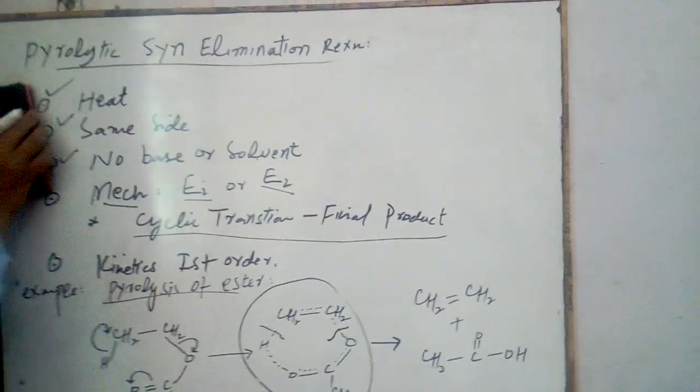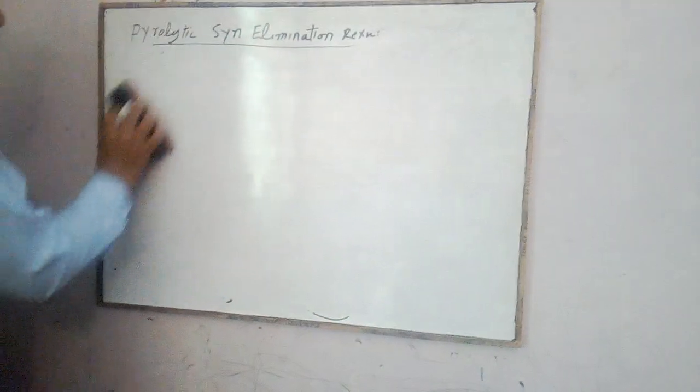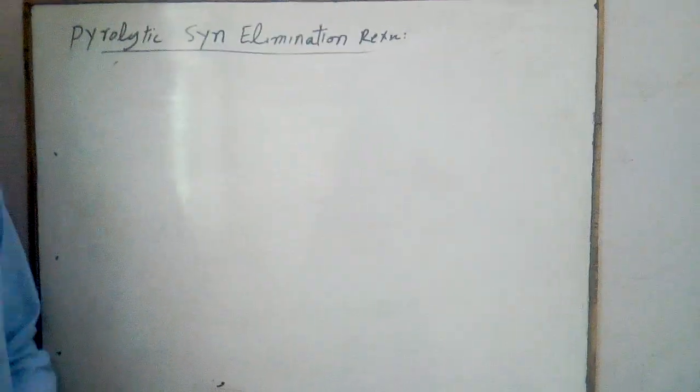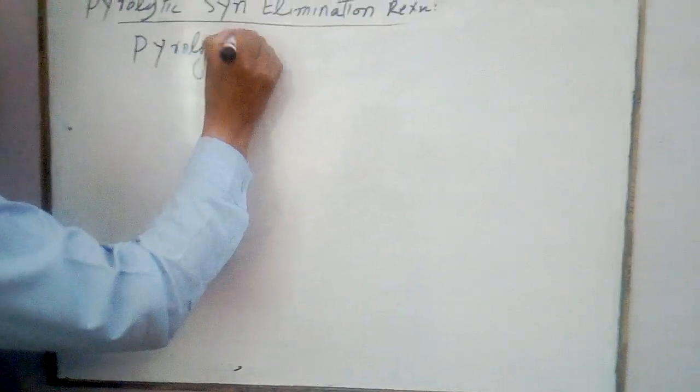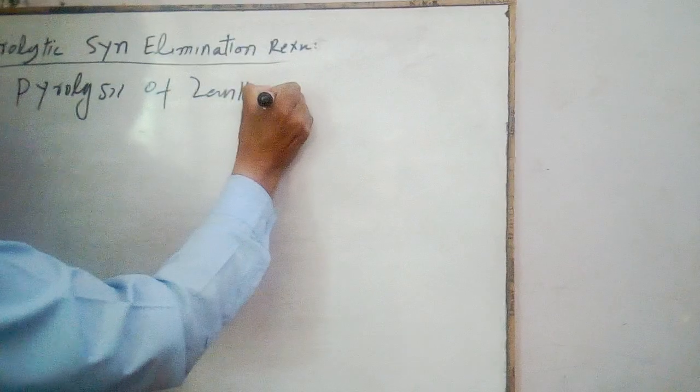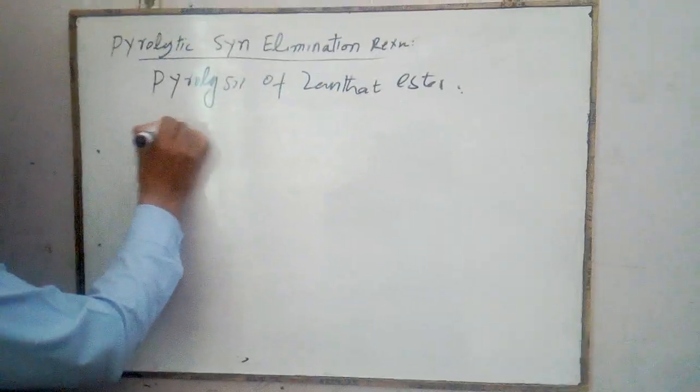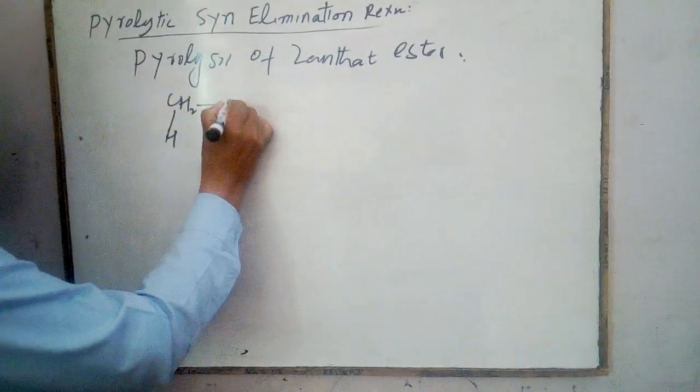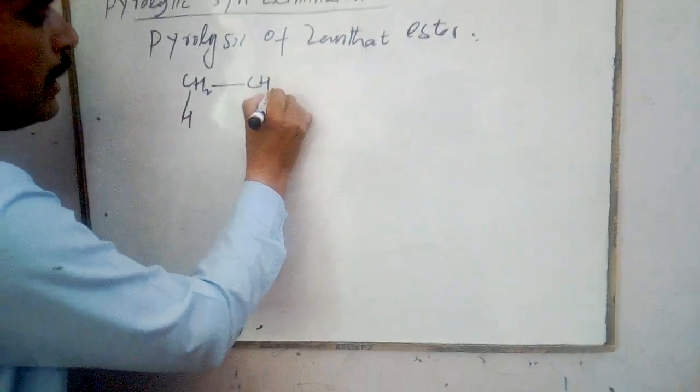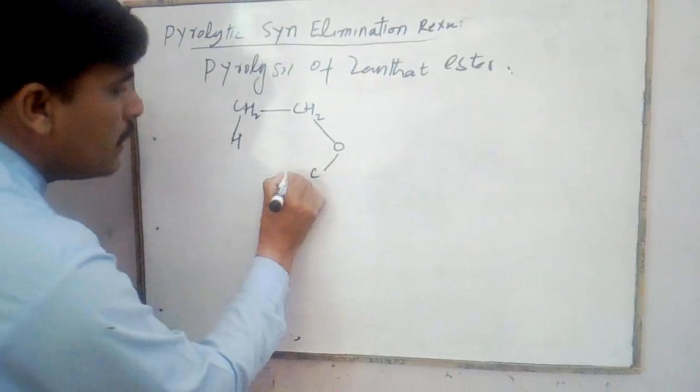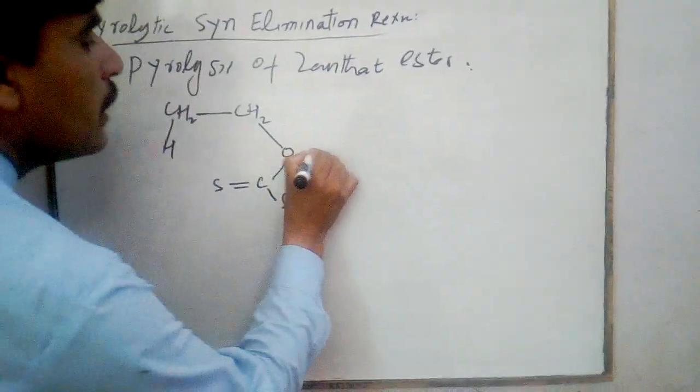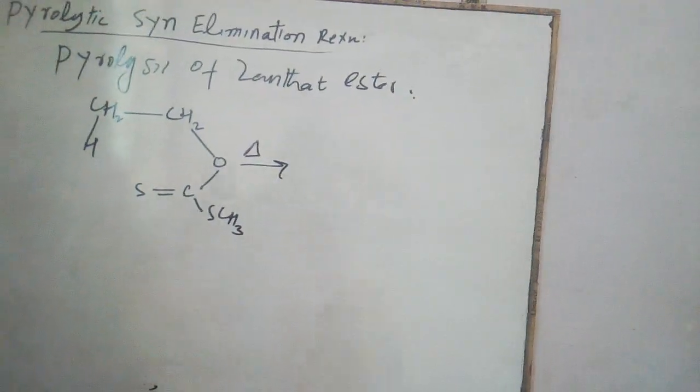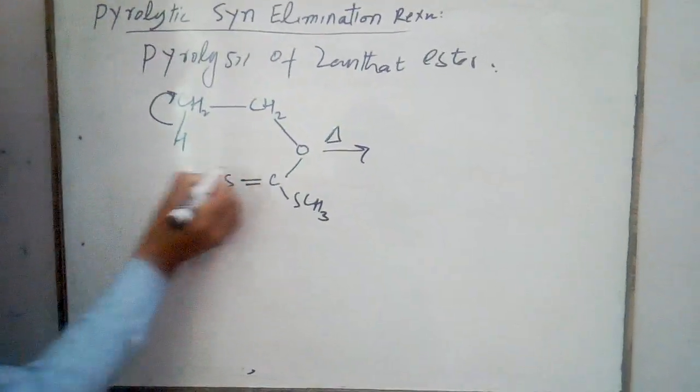This is pyrolysis of ester. Now we will discuss another example of the pyrolysis syn elimination reactions that is said to be the Chugaev reaction. Chugaev reaction is actually the pyrolysis of xanthate ester, pyrolysis of xanthate ester. Let me take an example. This is a xanthate ester, and we will carry out their pyrolysis with the help of heat.